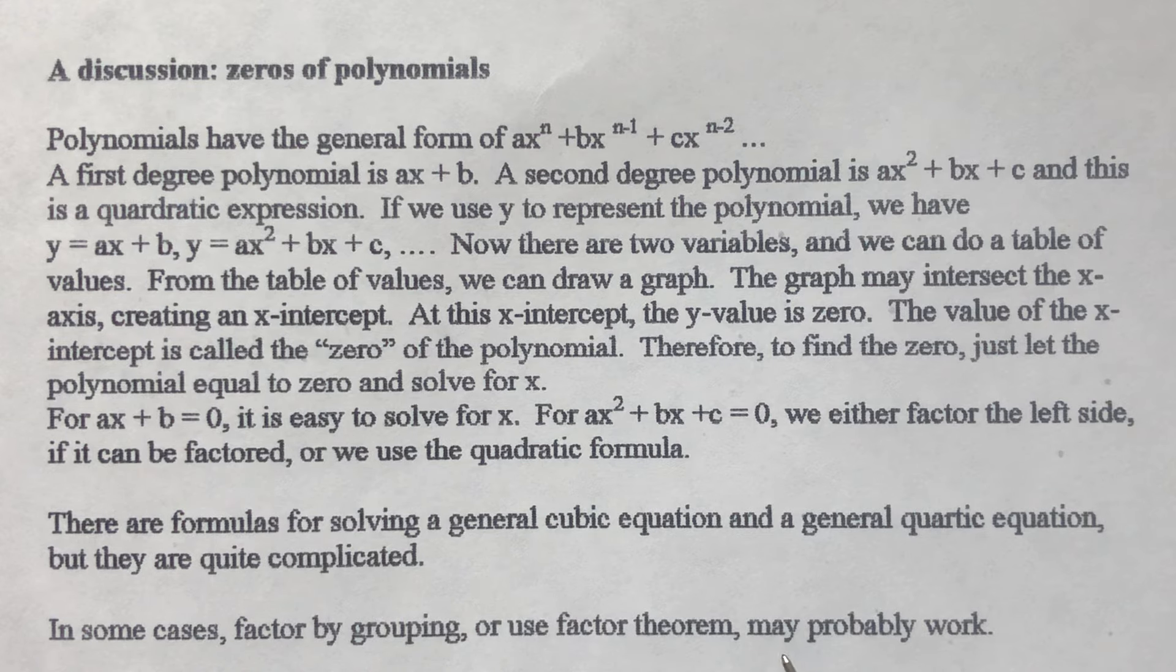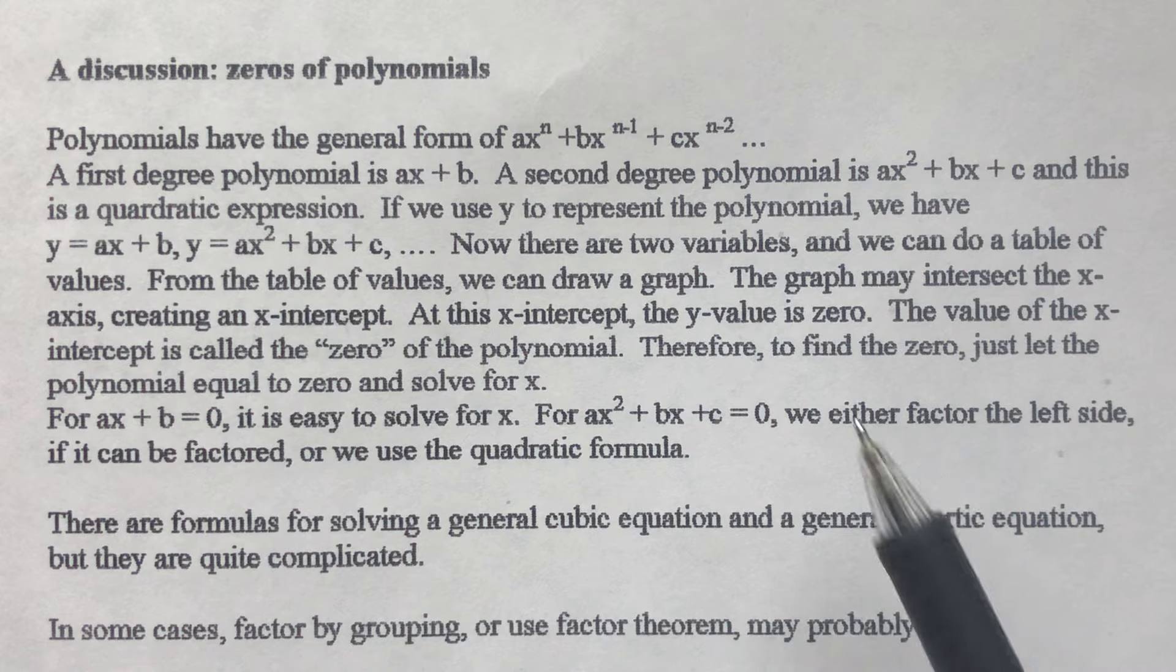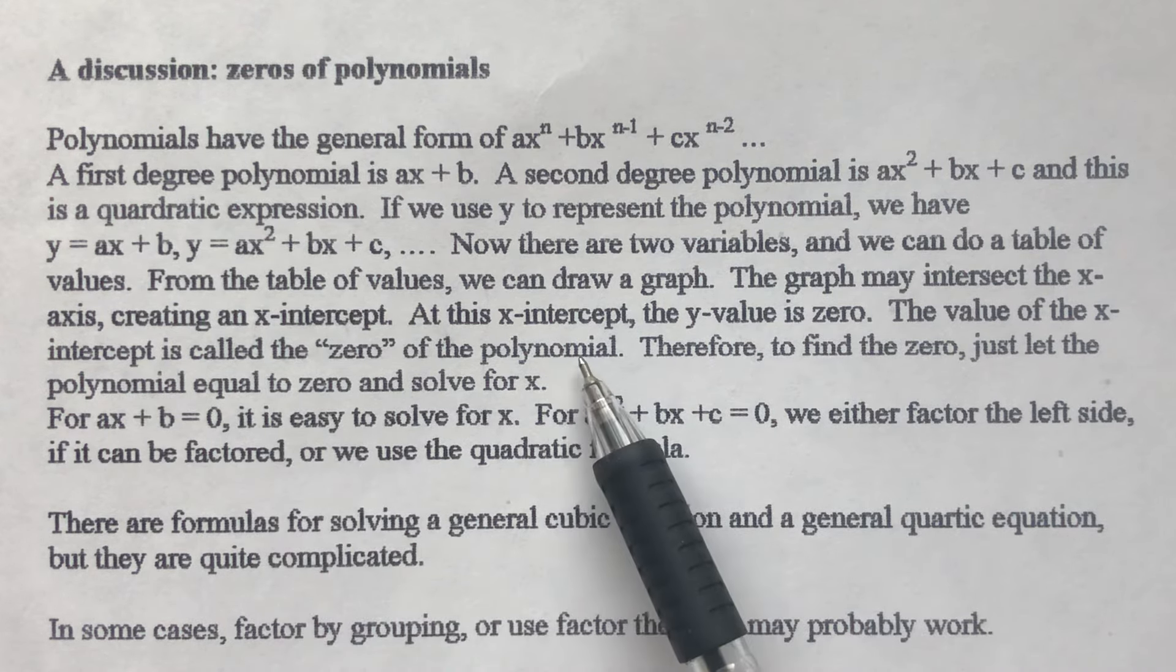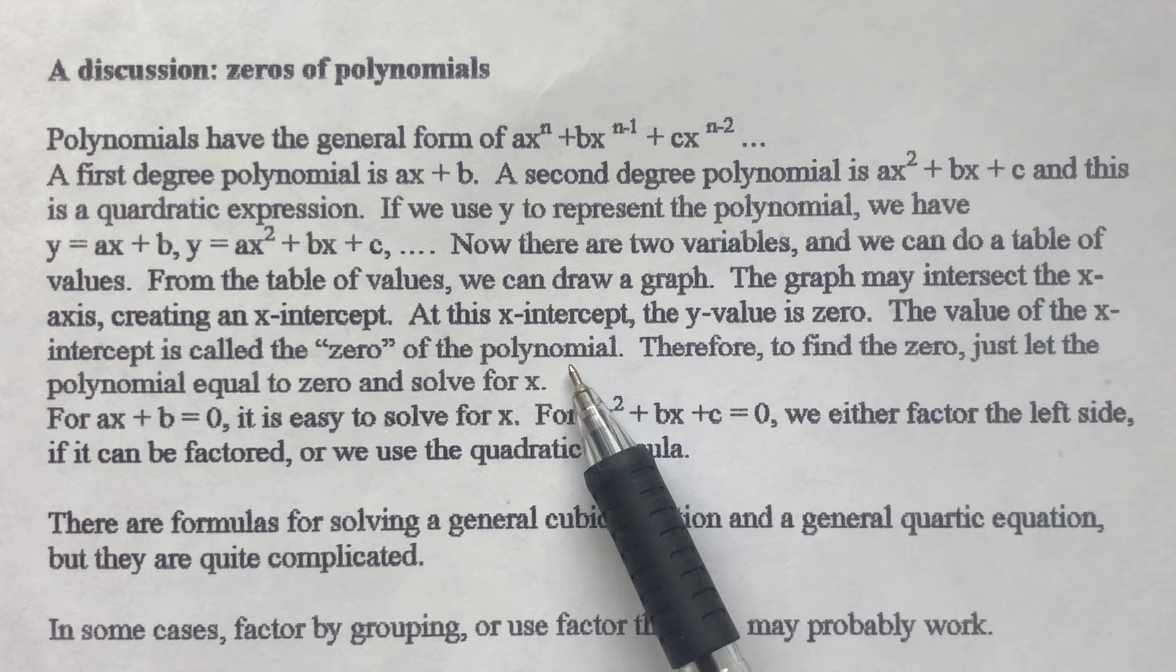So we understand that the zeros of the polynomial means the x-intercept. How do we find the zeros of the polynomial? That means how do we find the x-intercept? And that means we let the polynomial equal to zero.